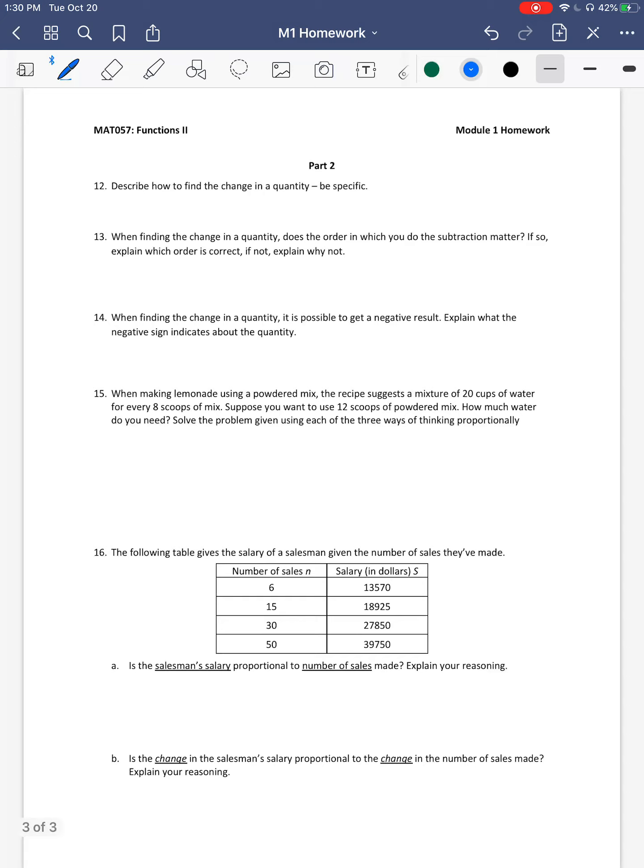Specifically, I want to talk about this last page and numbers 15 and 16. We've already done 15 a few times within Module 1, but let's just make sure. So it says, when making lemonade using a powdered mix, the recipe suggests a mixture of 20 cups of water for 8 scoops of mix. Suppose you want to use 12 scoops of mix. How much water should you use? I tend to be a table person just because it helps me organize things. So over here, I'm going to make a table. So let's do the number of scoops of mix and the number of cups of water. So this is cups of water. This is scoops of mix. And I'm going to organize it this way. So I know that 8 scoops of mix calls for 20 cups of water. We have 12 scoops of mix. We're looking for this.